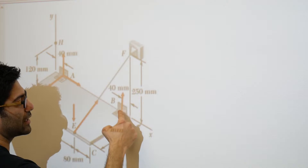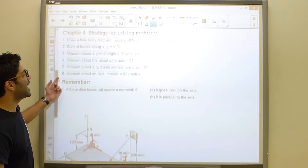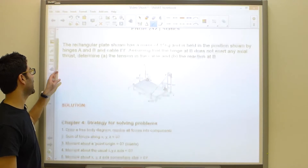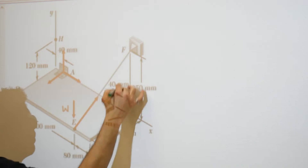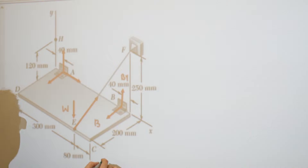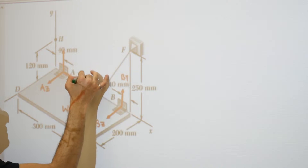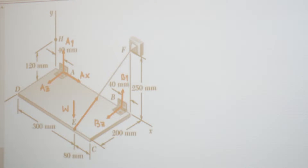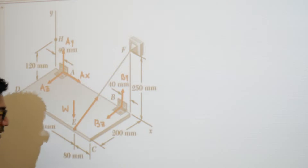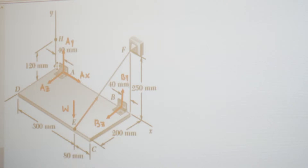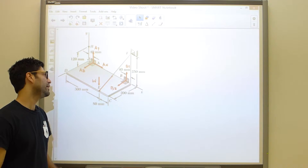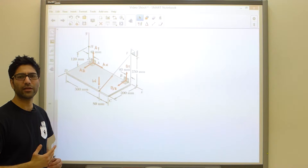Similarly, at B there are three forces as well, except the problem states that the hinge at B does not exert any axial thrust — meaning there will not be a force along its axis. So our free body diagram will have: the weight W, forces BY and BZ at hinge B, and forces AZ, AX, and AY at hinge A. That's our first step — building the free body diagram.